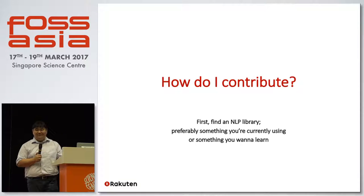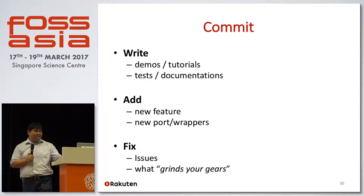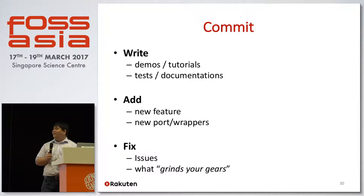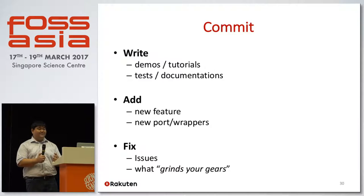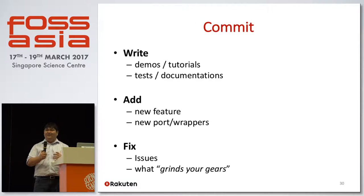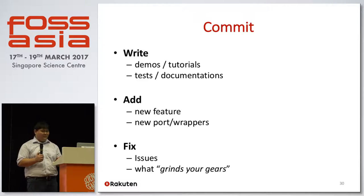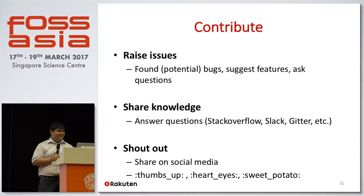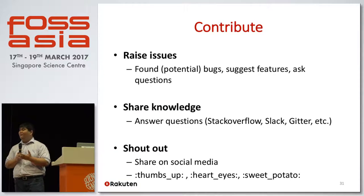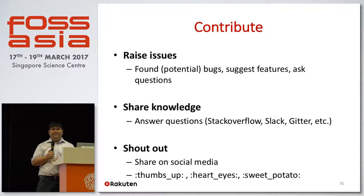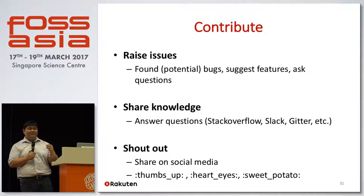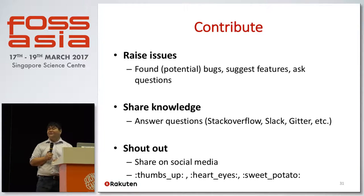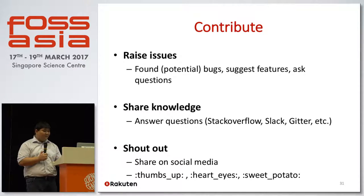How to contribute: first, find a library you like — not only NLP, any library. You can commit code, write demos and tutorials which are very helpful for users and for your own learning, add new features, add new ports or wrappers, or fix issues. A lot of small problems exist like off-by-one errors and type issues. You can also contribute without coding by raising issues — if you find bugs you can report them without writing any code, and someone else can fix them.